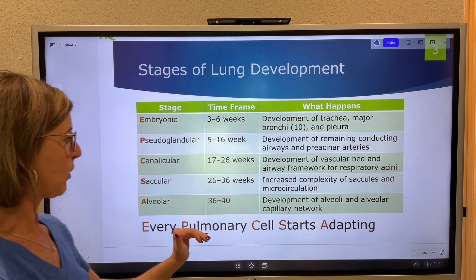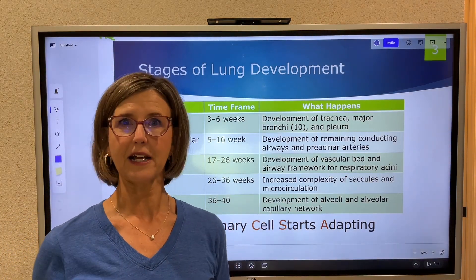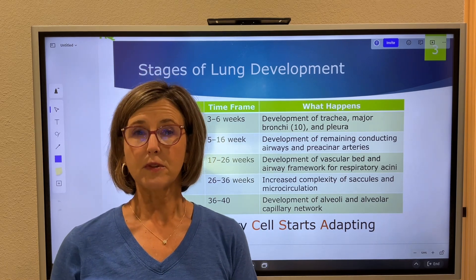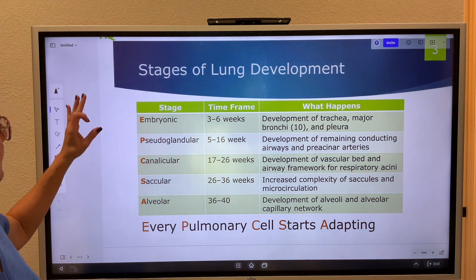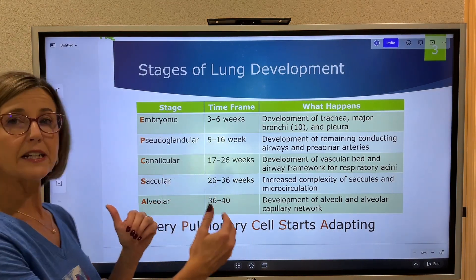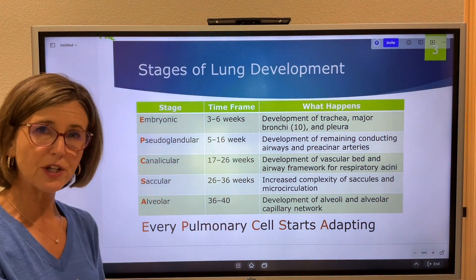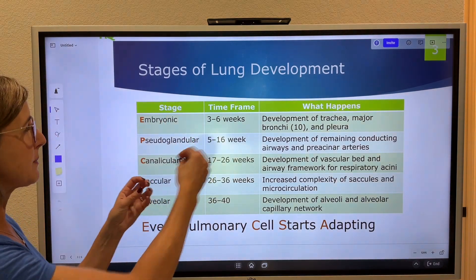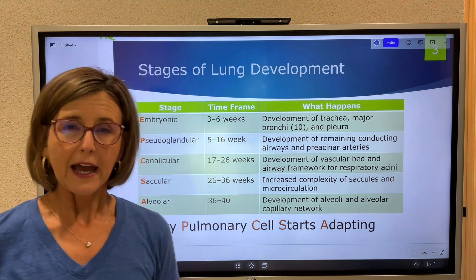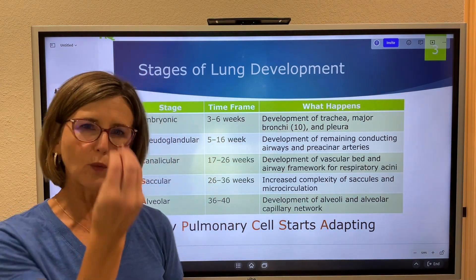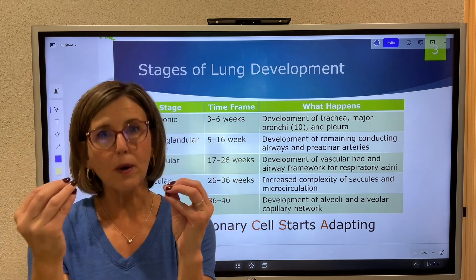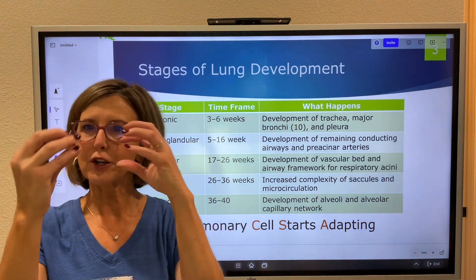That acronym is fitting because that's exactly what's going on: the cells are becoming the airways, alveoli, and capillary bed. The embryonic stage starts from about three to six weeks post-conception. Remember buds — everything starts as a bud. One little bud forms the trachea, and from that, two more buds develop into the mainstem bronchi.